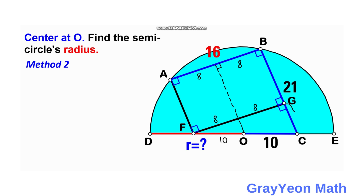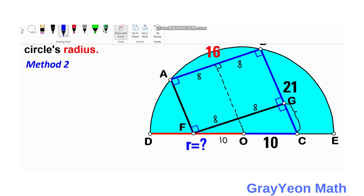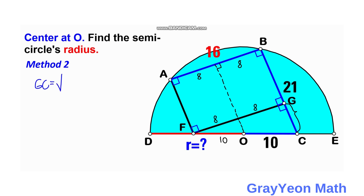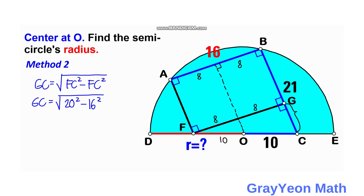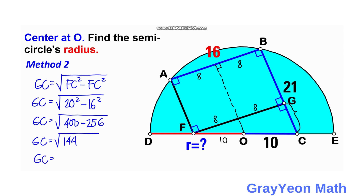Next we find the length of GC. GC is one leg of a right triangle, so GC equals the square root of OC squared minus OF squared, which is the square root of 400 minus 256. GC equals the square root of 144, giving us GC equal to 12 units.